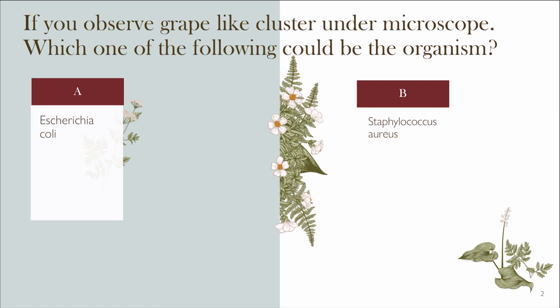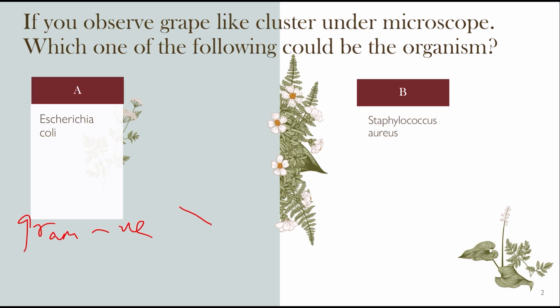Escherichia coli is a gram-negative microorganism and the shape of the bacteria is rod-shaped — a coliform bacteria. It is a type of bacteria that normally lives in your intestine and in some animals it is part of the gut flora.